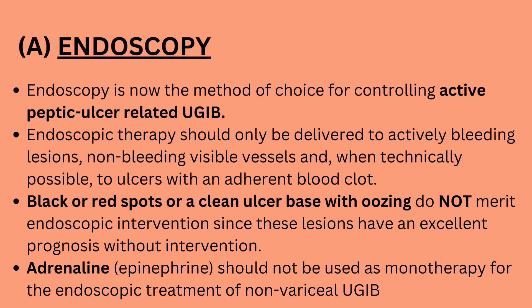Treatment of non-variceal bleeding. Endoscopy is now the method of choice for controlling active peptic ulcer-related upper GI bleed. Endoscopic therapy should only be delivered to actively bleeding lesions, non-bleeding visible vessels, and when technically possible, to ulcers with an adherent blood clot. Black or red spots or a clean ulcer base with oozing do not merit endoscopic intervention, as these lesions have an excellent prognosis without intervention. Adrenaline (epinephrine) should not be used as monotherapy for the endoscopic treatment of non-variceal upper GI bleed.